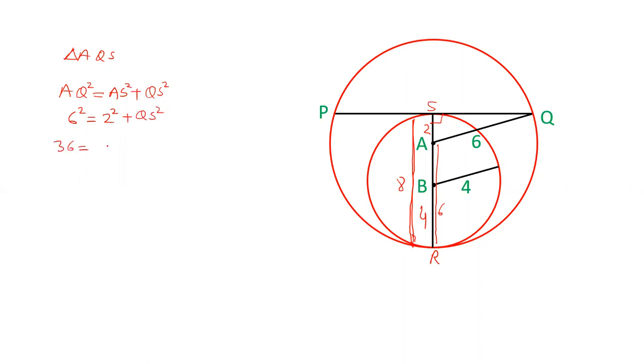This is 36. 2 squared is 4. 36 minus 4 is QS squared. That is 32 equals QS squared. The value of QS is the square root of 32.